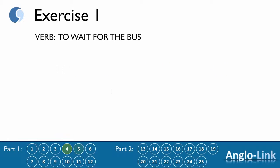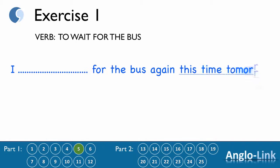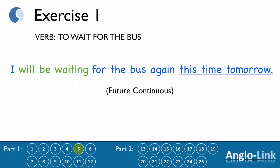Number 5: 'I ___ for the bus again this time tomorrow.' Answer: 'I will be waiting for the bus again this time tomorrow.' Future continuous.